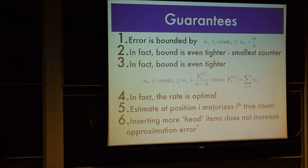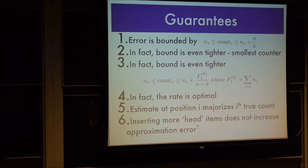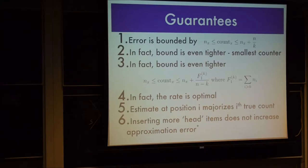The guarantees that you can get from SpaceSaver are actually quite surprising. The first thing is the error is bounded by n over k. That was simply due to the fact that the sum of n-hat-x over all x in SpaceSaver is exactly n. Since at each step we increment by one, we know that we have k bins, so therefore the smallest bin — min over x of n-hat-x — is less than or equal to n over k. This is the Pigeonhole principle.